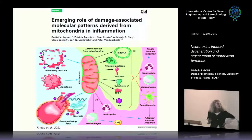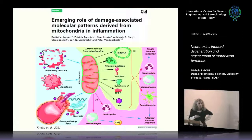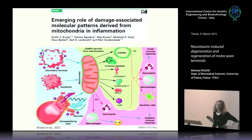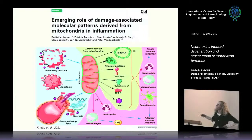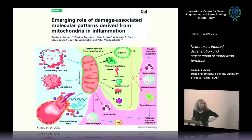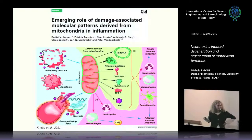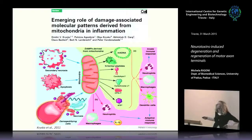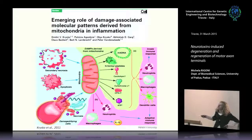Looking for molecular mediators released by degenerating nerve terminals that could alert nearby cells and activate a regeneration response, we focused on mitochondria. Mitochondria are emerging as a source of molecules that, once released outside cells, can activate immune cells and induce an inflammatory response even in the absence of infection. Because of the endosymbiotic origin of mitochondria, their components share many features of bacteria — a mitochondrial DNA similar to bacterial DNA and N-formyl peptides.